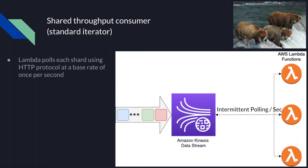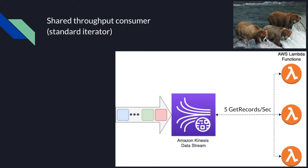With a shared consumer, Lambda polls each shard in your Kinesis stream for records at a base rate of once per second using the HTTP protocol. When more records are available, Lambda keeps processing batches until the function catches up with the stream. Shared throughput consumer uses the GetRecords API call. There can be at most 5 GetRecords calls made per second per shard. This limit also means that you can have at most 5 different consumers using shared throughput before they start to get throttled.